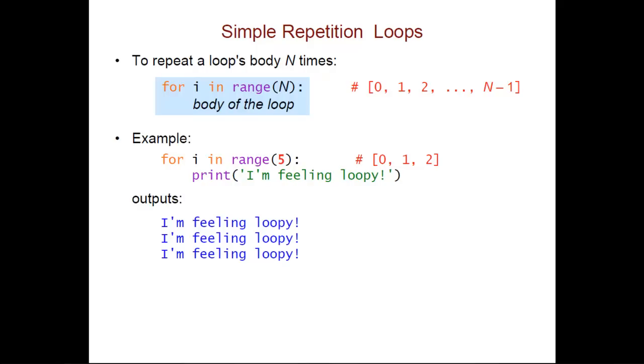If I change range 3 to range 5, because that's equivalent to this list, from 0 to 4, which has 5 values in it, I'm going to end up printing the string 5 times.